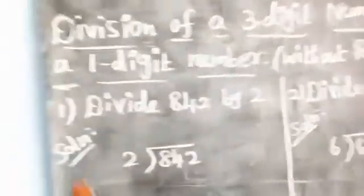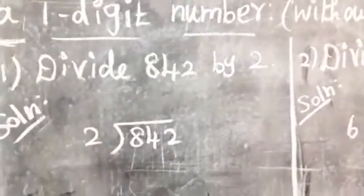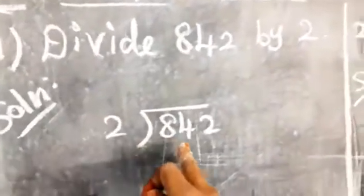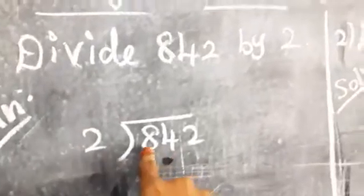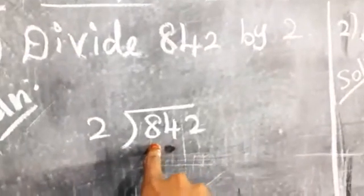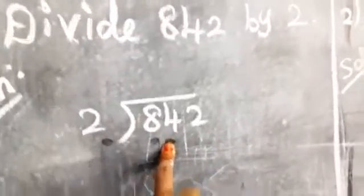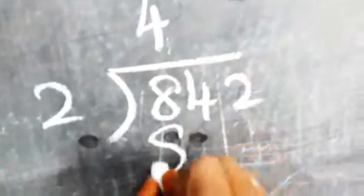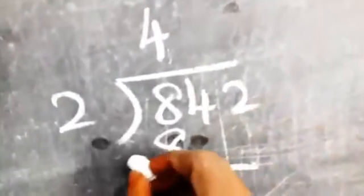Now look at the example. I divide 842 by 2. Write the dividend and divisor. We start with the hundreds place — 8 is in the hundreds place. How many twos are 8? Yes, 4 twos are 8, so write 4 in the quotient. 4 twos are 8, so write 8 in the dividend, then subtract: 8 minus 8 equals 0.